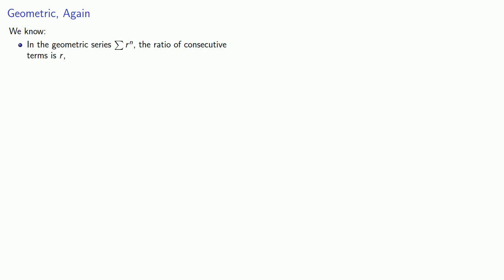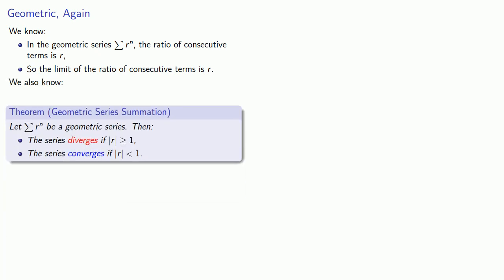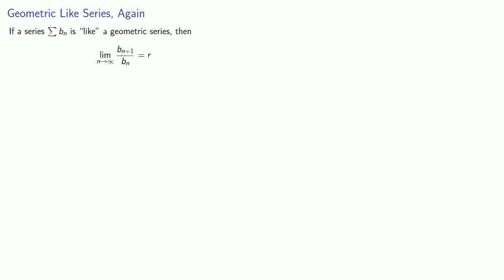We might look at a geometric series in a different way. We know that in the geometric series, the ratio of consecutive terms is r. So the limit of the ratio of consecutive terms is r, and again the series diverges if the absolute value of r is greater than or equal to 1, and converges if the absolute value of r is less than 1. This suggests that if we have a series like a geometric series, the limit as n goes to infinity of the ratio of successive terms will be some ratio r, and the series converges if the absolute value of r is strictly less than 1.